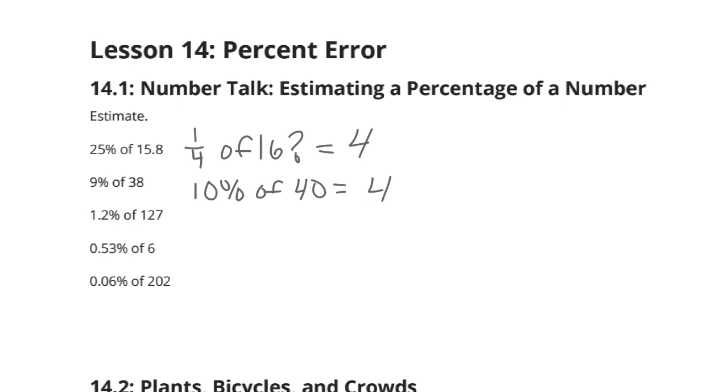1.2% of 127. Again, a lot of different options here, but what if we look at 1% of 130? Well, that would be 1.3.